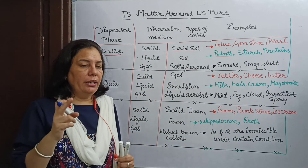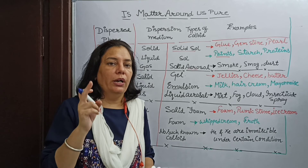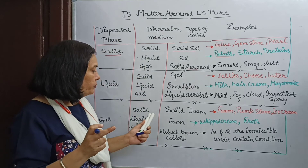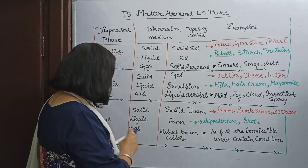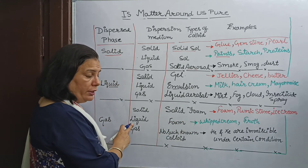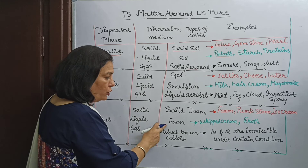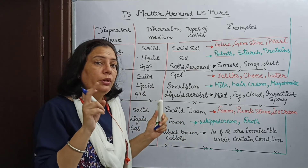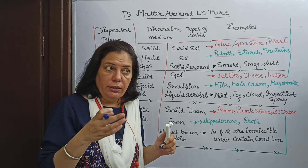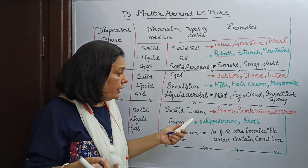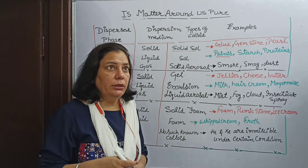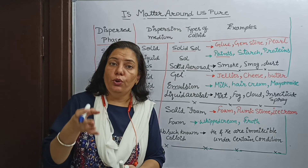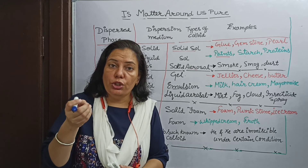When gas dissolves in liquid, it is called foam. Examples are whipped cream — the cream used to decorate cakes — and froth. Froth is a colloidal solution formed during the extraction of metals.